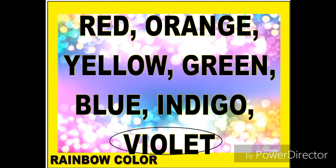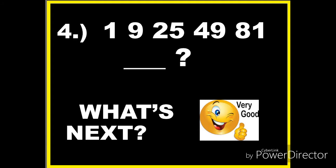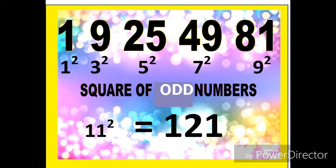Those are the rainbow colors. Number four: we have the numbers 1, 9, 25, 49, 81. Observe what is common to these numbers — they are all perfect squares. We have 1²=1, 3²=9, 5²=25, 7²=49, 9²=81. These are the squares of odd numbers: 1, 3, 5, 7, 9. The next term is 121, which is the square of 11.